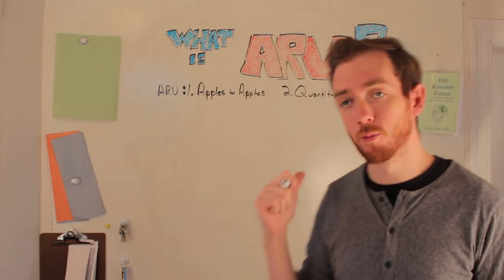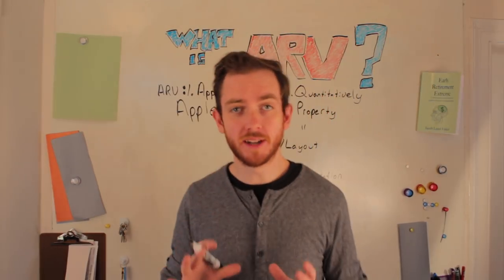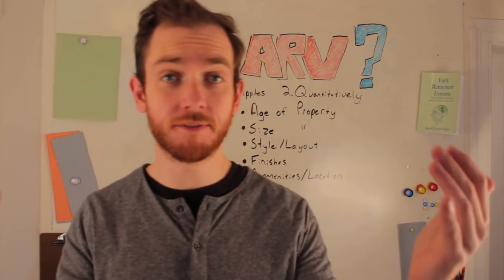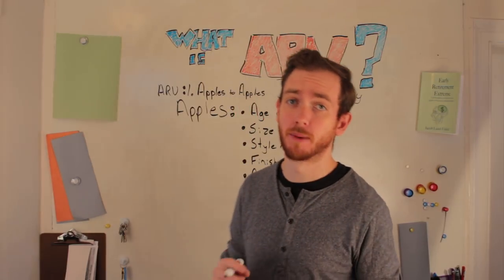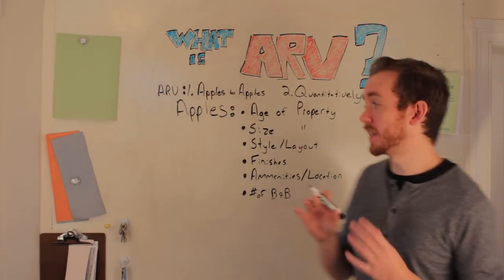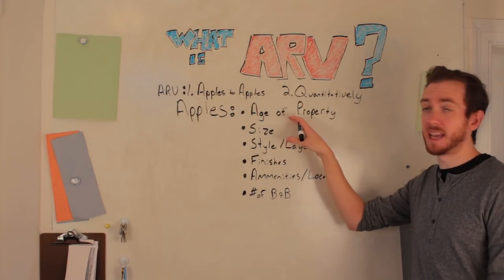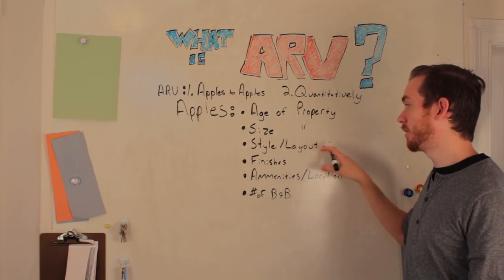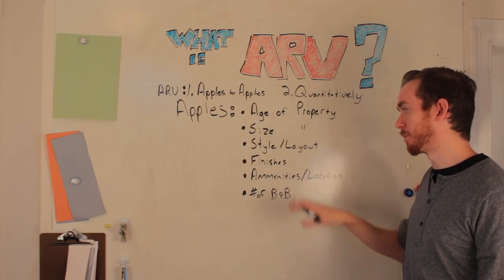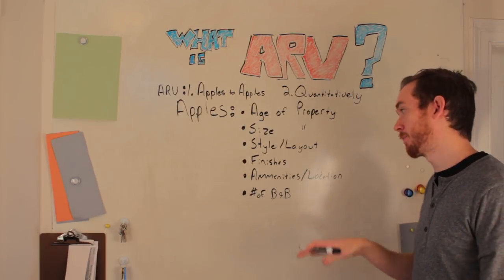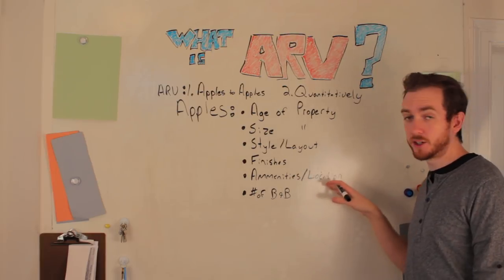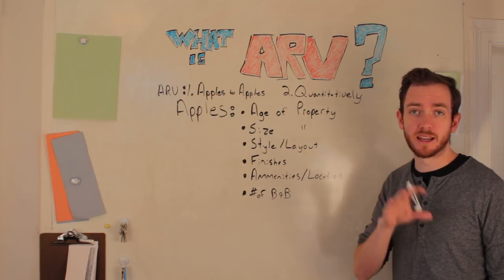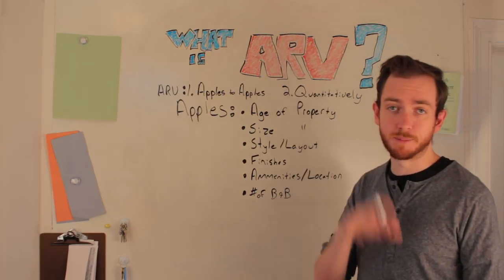When trying to do an apples-to-apples comparison, we're going to sift through all the information that's out there in the market and look at key factors — such as the age of the property, the size of the property, the style or layout of the property, the finishes on the specific property, as well as the amenities and location of the property, and the number of beds and baths.